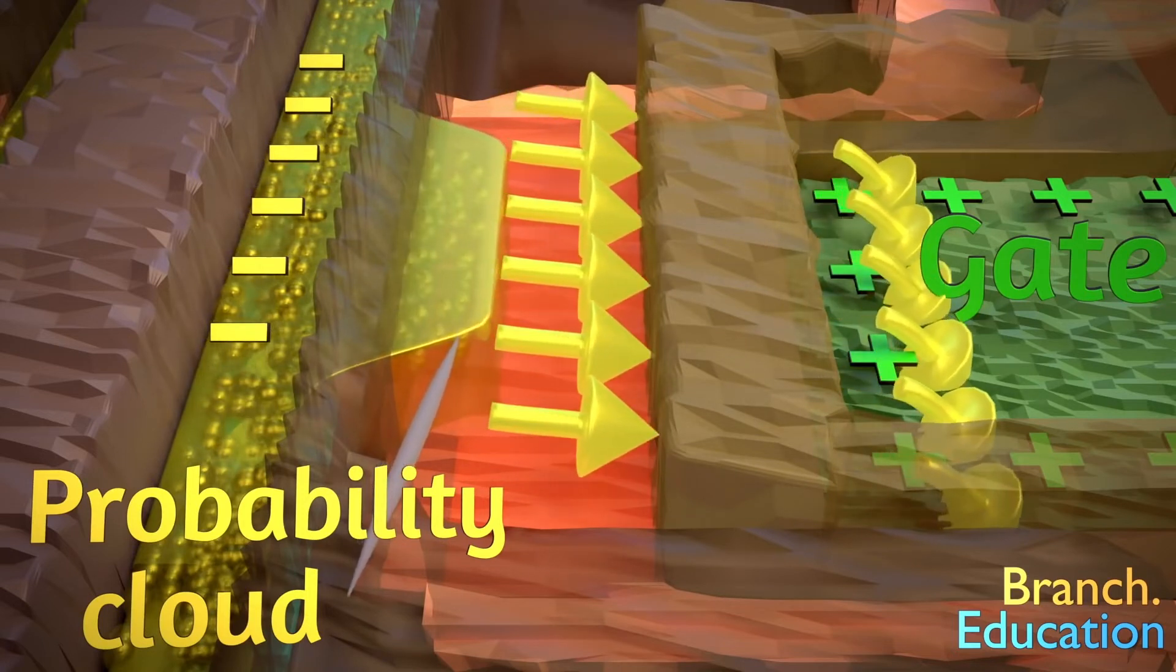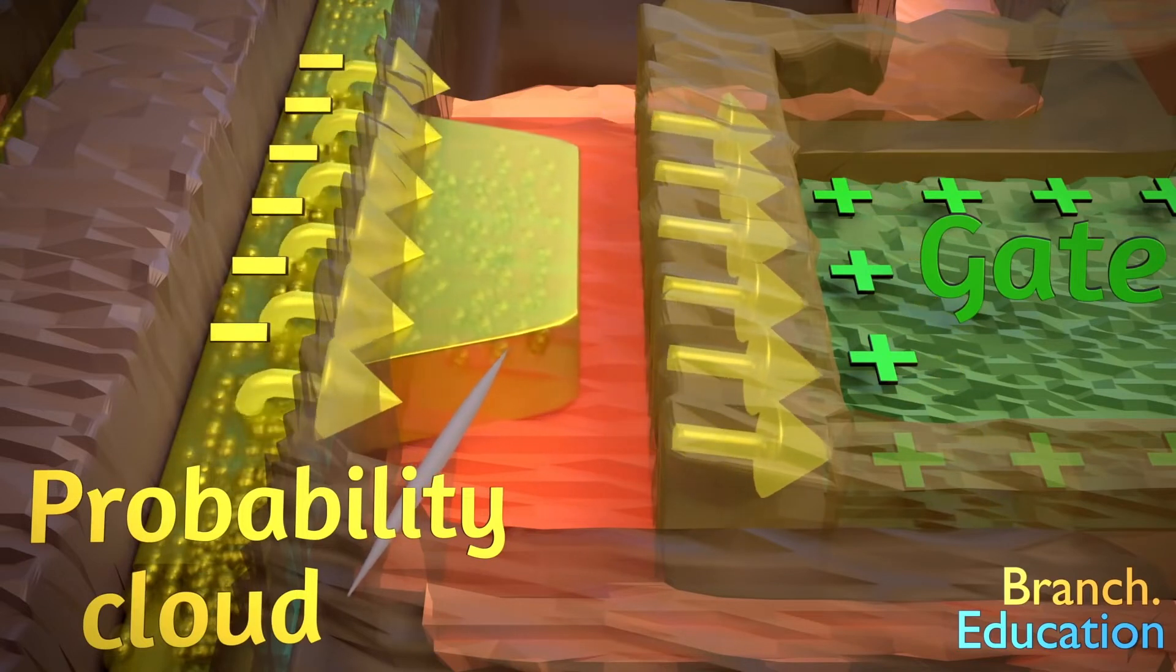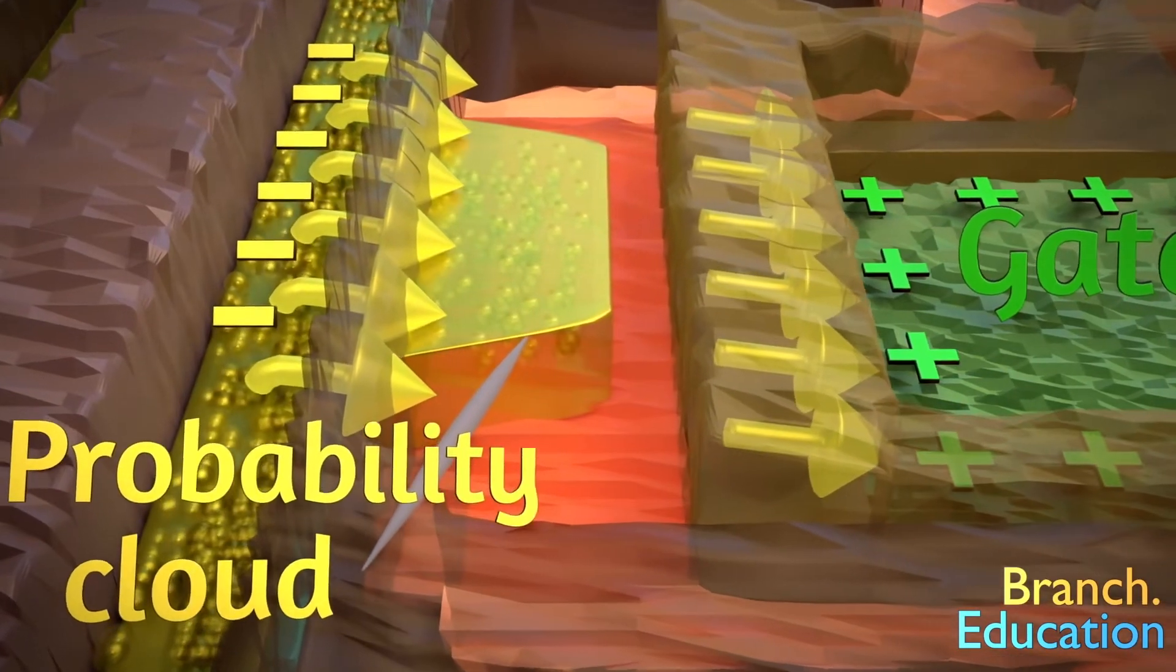If the dielectric mountain range is thin enough and the gate voltage is high enough, then the probability cloud will be pulled enough to the right so that it is likely that some electrons will get trapped in the orange valley.